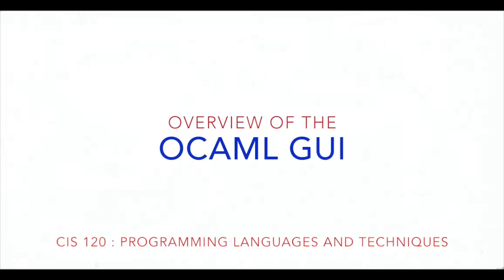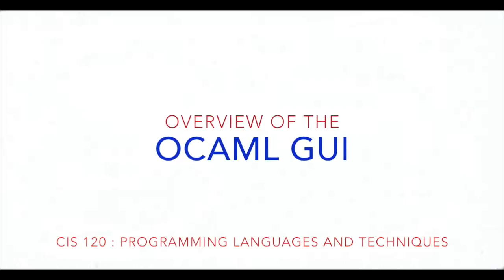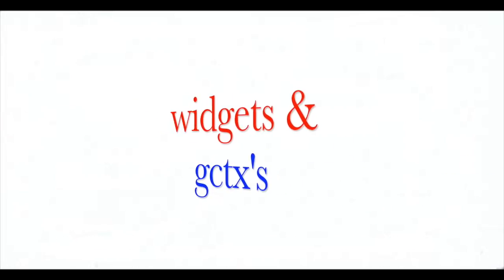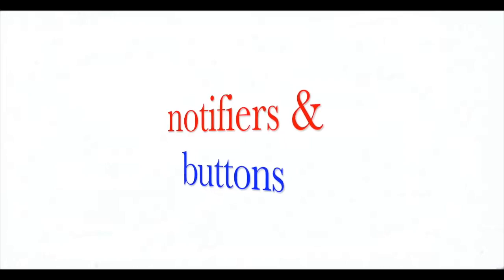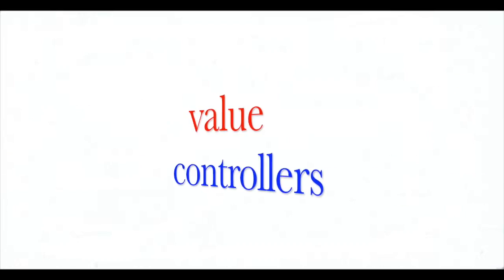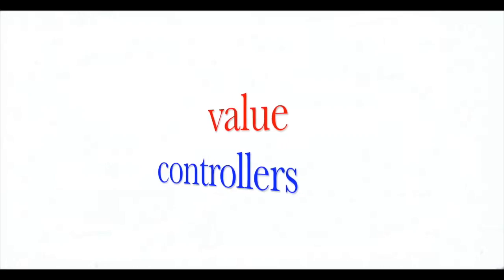So the majority of questions that we've been getting regarding the OCaml GUI are: one, just the role of a widget in a graphics context; two, what is a notifier and a notifier controller; and three, what is a value controller. So I'm just going to be doing a quick and dirty overview of these things.